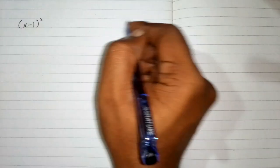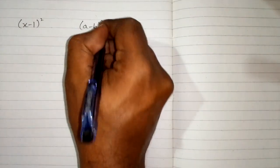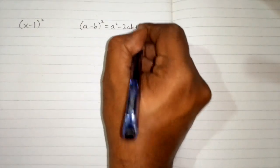In this video we will find the square of x minus 1. So we will use the algebraic identity a minus b whole square is equal to a square minus 2ab plus b square.